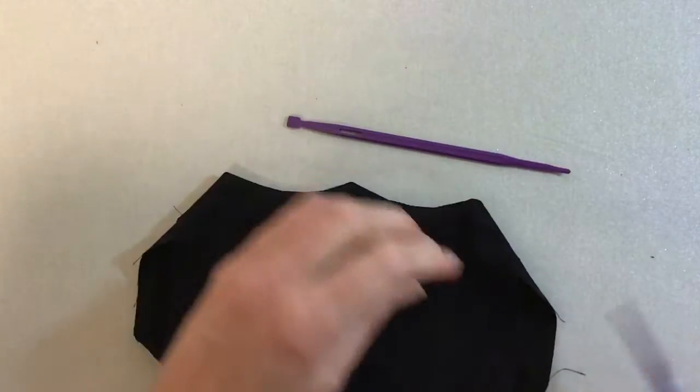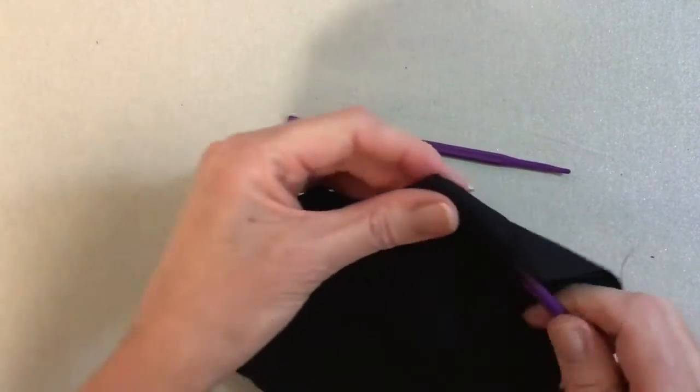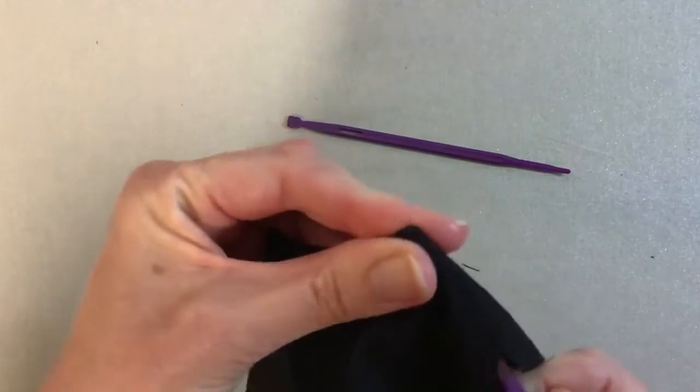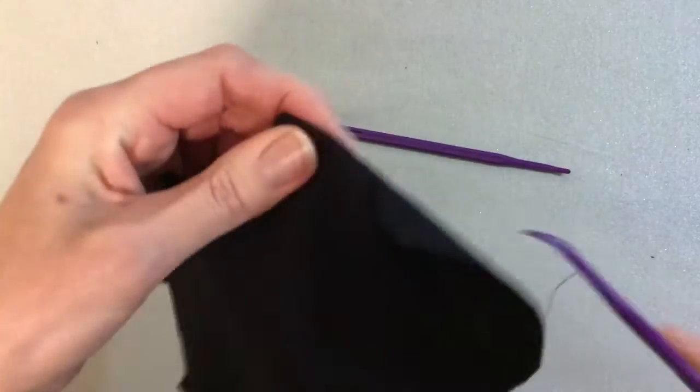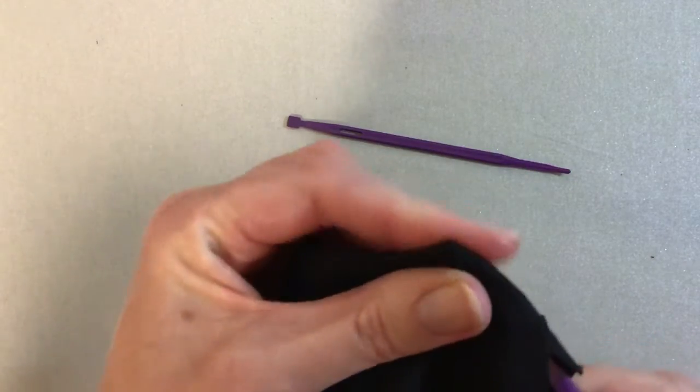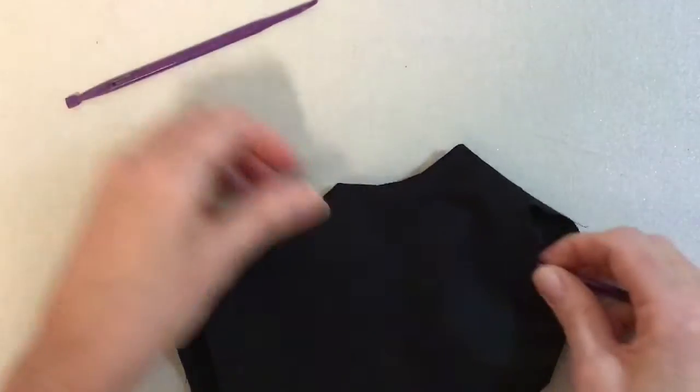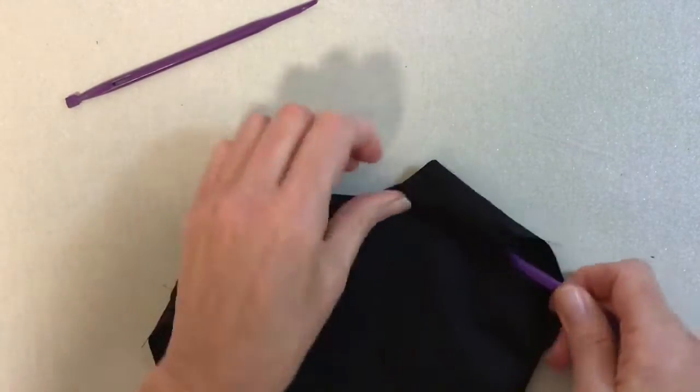So I just use my tool to get into all the little points. Just be careful when you're doing that because you can actually go right through the fabric if you're not careful. You just sort of go firmly but gently to get into there, get your points happening.